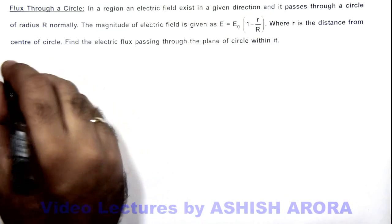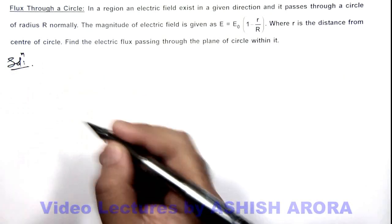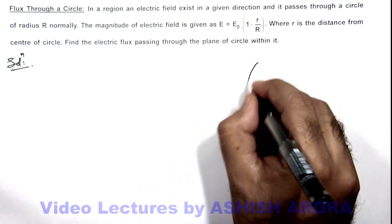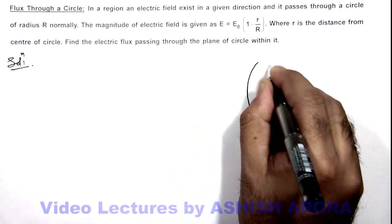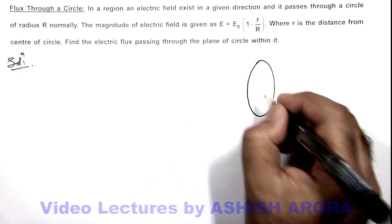In this solution, if we draw this situation, here you can see this is a circle which is of radius R.